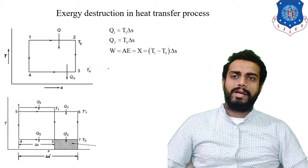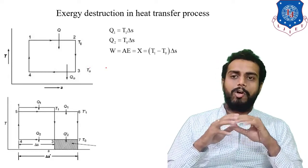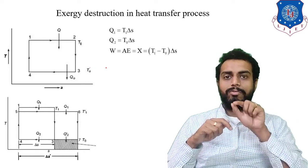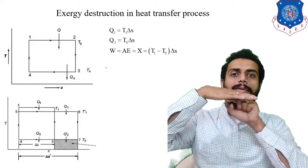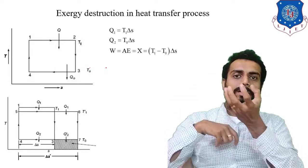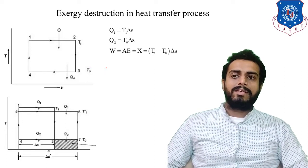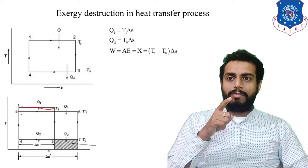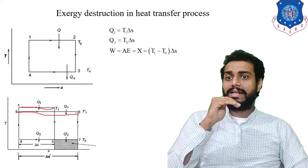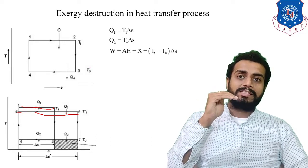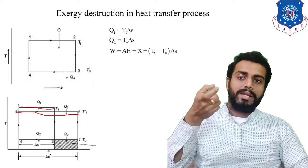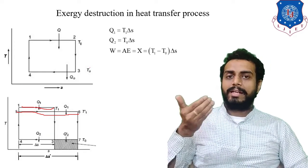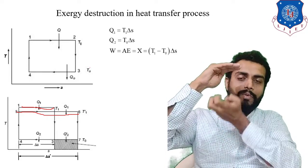Now we will take the case where we are operating an engine in which a working fluid is constantly flowing in a cycle. This working fluid will come in contact with the reservoir and extract heat from it. Ideally, the reservoir is at temperature T1, and the temperature of the working fluid is T1'. You can see that T1' is somewhat lower than the reservoir temperature T1.